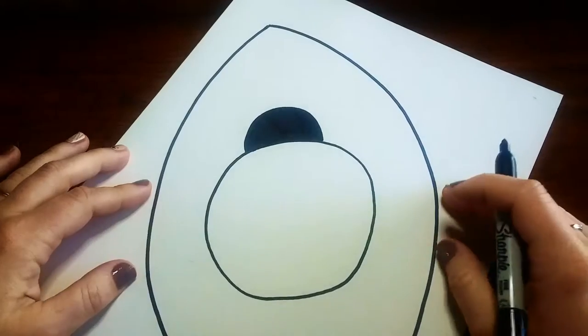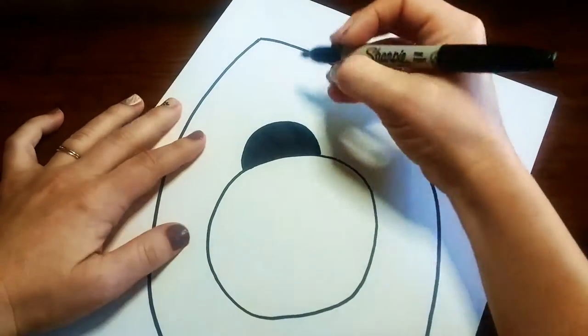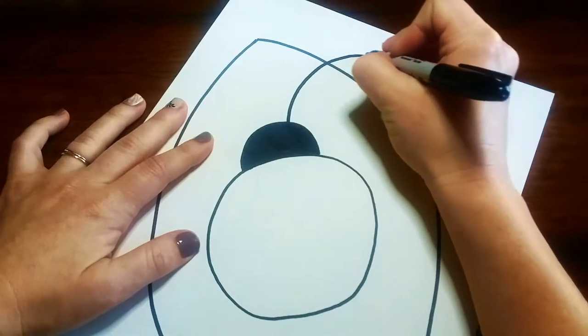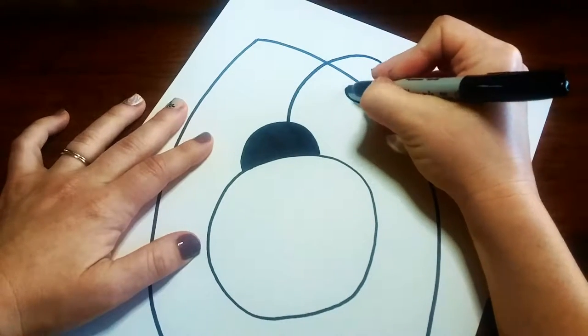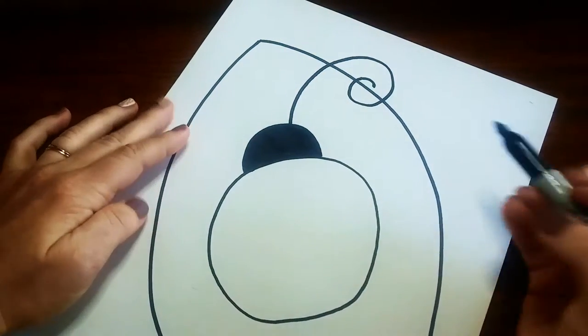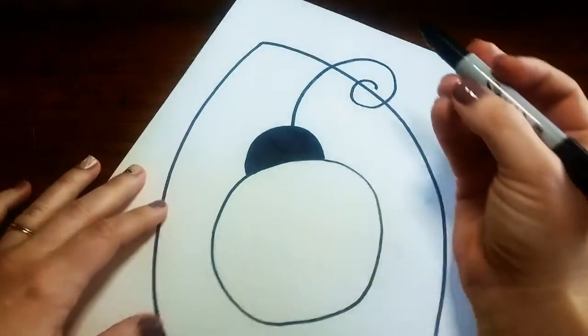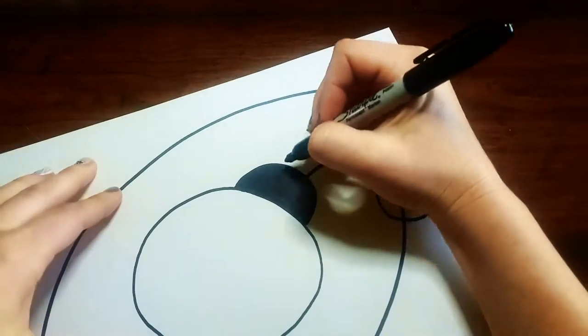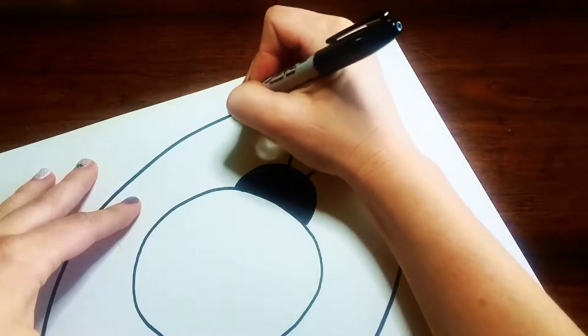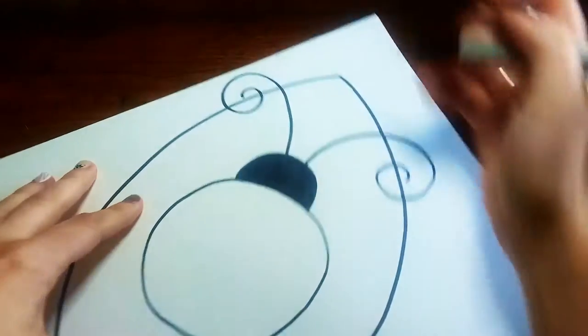Alright so now we can add in some antennas. So I like to make mine really big and what I do is a curved line goes up and then I curl it under. And I'm not really worried about drawing over top of the leaf because that's where his antennas are gonna go. So I'll do one going that way and then the other one is gonna go curl in the other direction just like that.